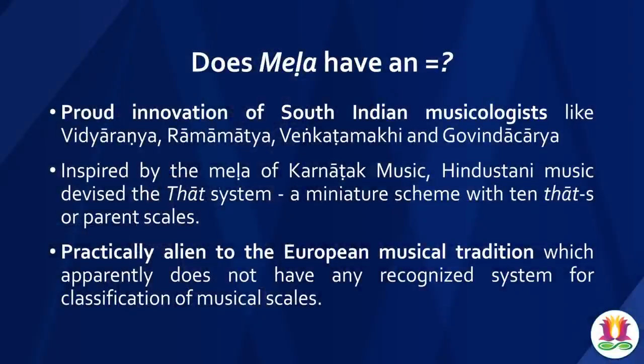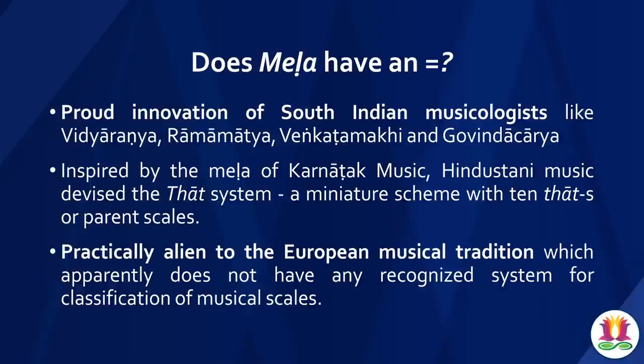The Hindustani system got inspired from the Carnatic system. Bhatkhande was a great musician in the late 1800s and early 1900s. He got inspired from the Mela system of Carnatic music and devised what is known as the Thaat system. But it is only a miniature scheme with 10 Thaats — it doesn't have the full-fledged 72-scheme. So Mela is Mela and Thaat is Thaat. Coming to non-Indian musical systems — Western music — this concept is practically alien to the European musical tradition, which apparently does not have any recognized system for classification of musical scales. They don't have this concept of organizing and categorizing Ragas in a particular order.